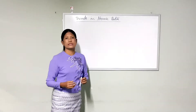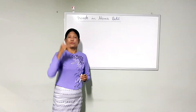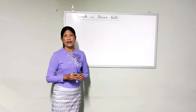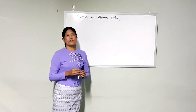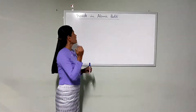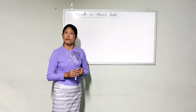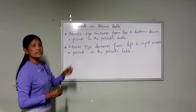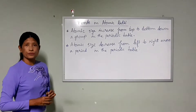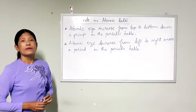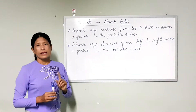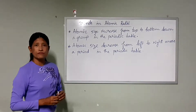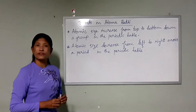At this time, top to bottom increase, left to right decrease. If you have a question about trends, then you will see that trends in atomic radii increase from top to bottom in a group in the periodic table. Atomic radii decrease from left to right across the period in the periodic table.